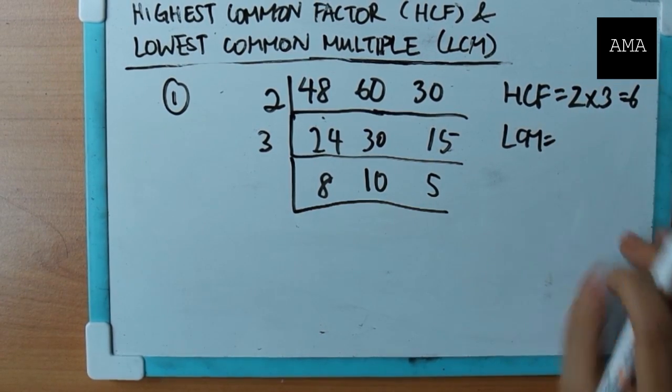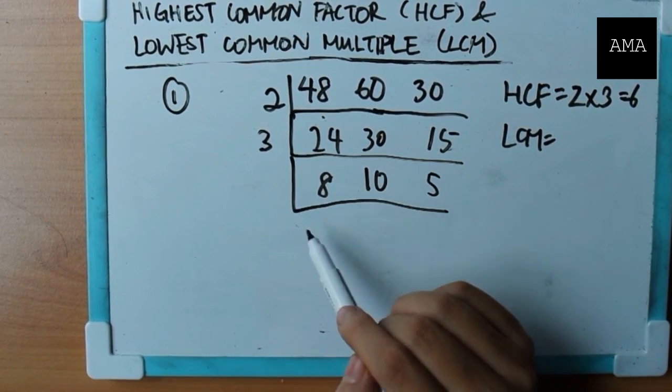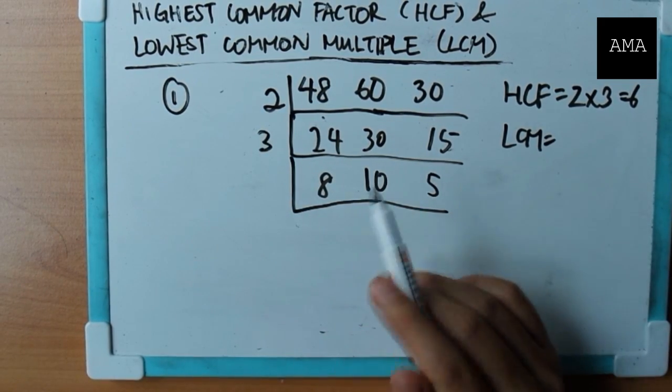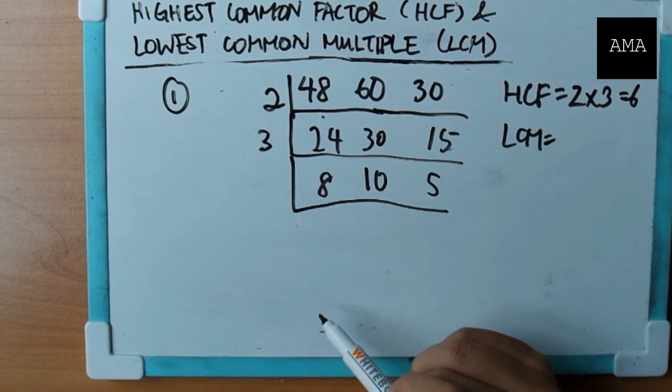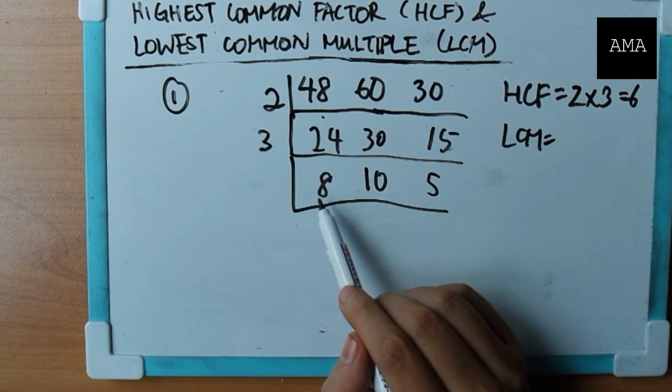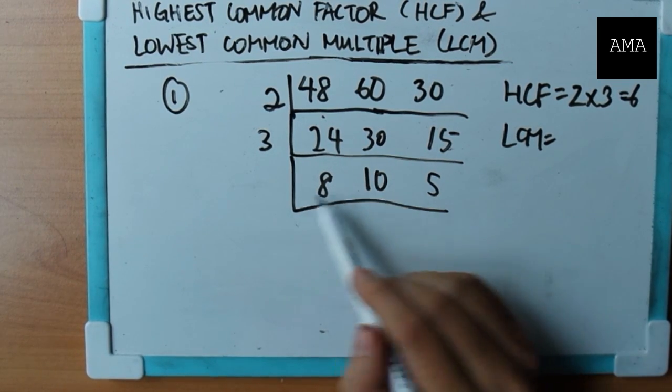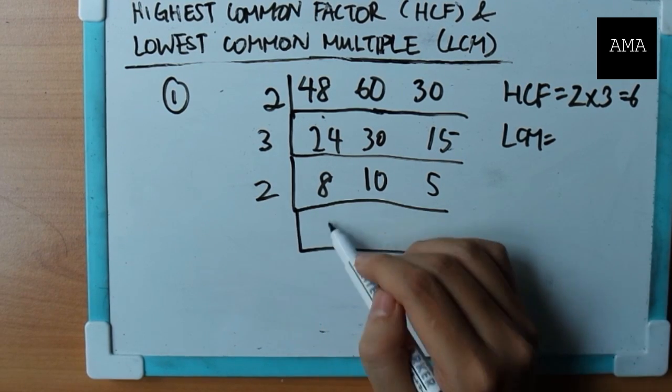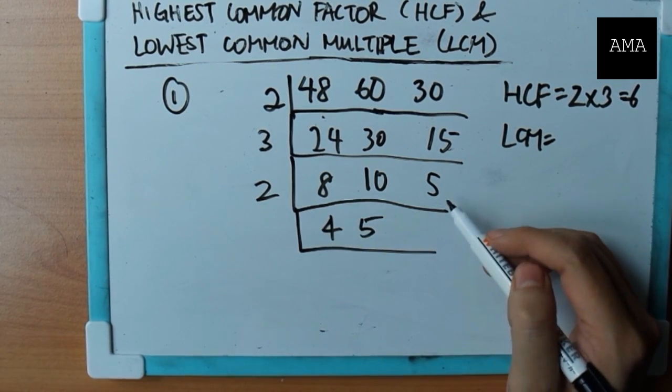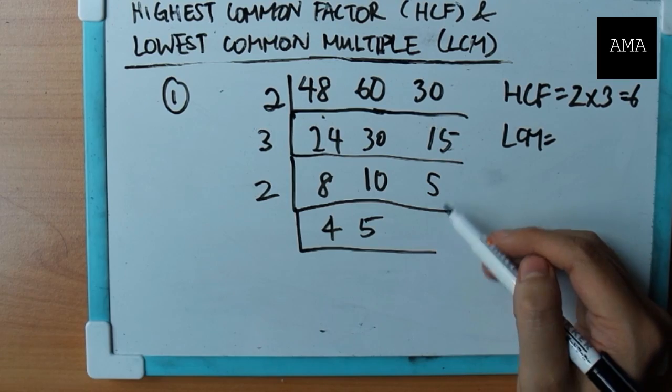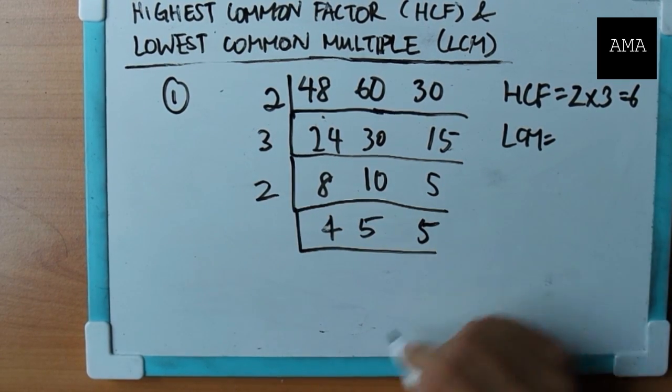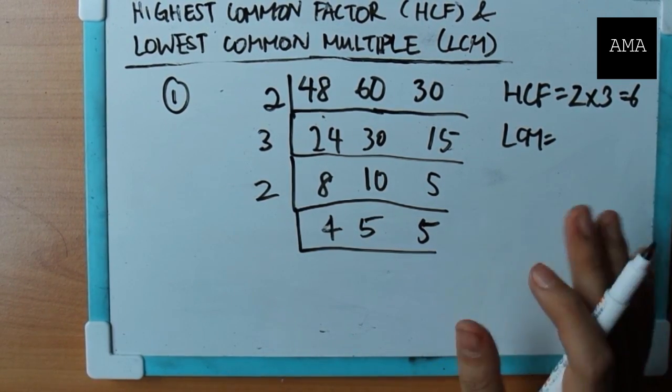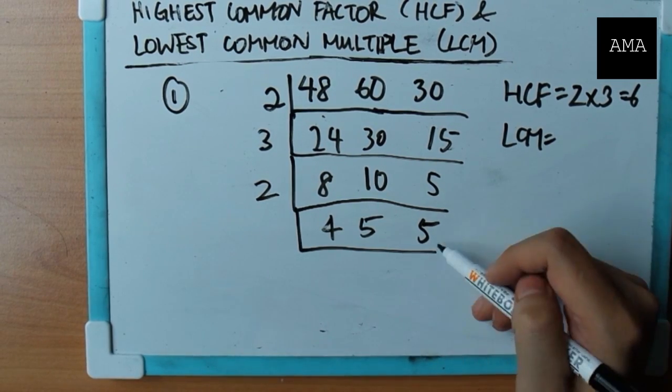What about LCM? Now the method is slightly different. You cannot just say, oh, two times three times eight times ten times five. No. You have to look at the subgroups of these three numbers. So for example, eight and ten is a subgroup, right? Eight and ten, I can still divide by two. But what about five? Five, I cannot divide by two. Anything that cannot divide by this number here, you just copy and paste it. Don't touch it. Don't do anything to it. Just copy and paste.